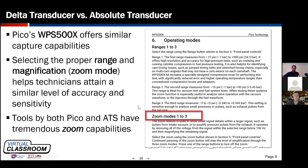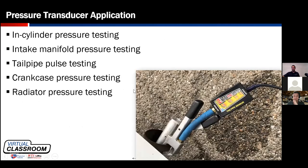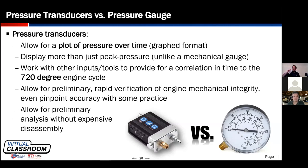Pressure transducers allow us to view pressure changes within an intake manifold, within the cylinder, the tailpipe, crankcase, and even the cooling system. There's a lot of information available so we can make diagnostic decisions — at least decide whether we need to disassemble an engine for visual inspection. It saves a lot of time, and Bren and I are going to show you how this works for us.